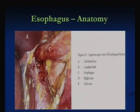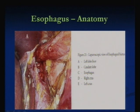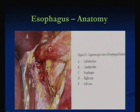This is the laparoscopic view of the esophageal hiatus. We can see the right crus, the left lobe of the liver, the caudate lobe, and the freno-esophageal membrane which has been dissected. The esophagus and the left crus of the diaphragm are also clearly visible.